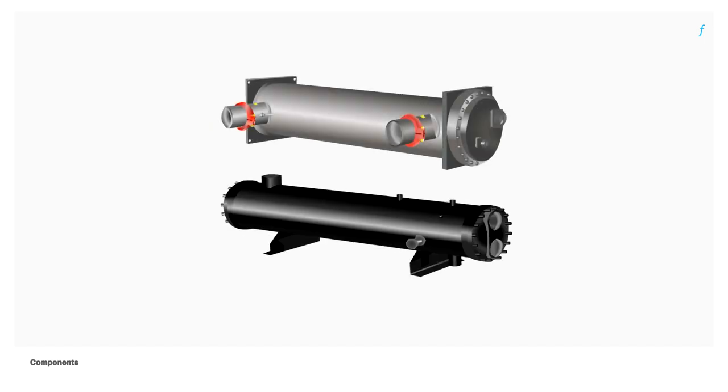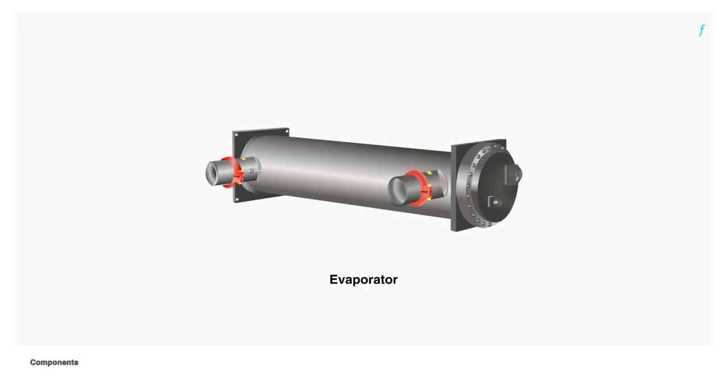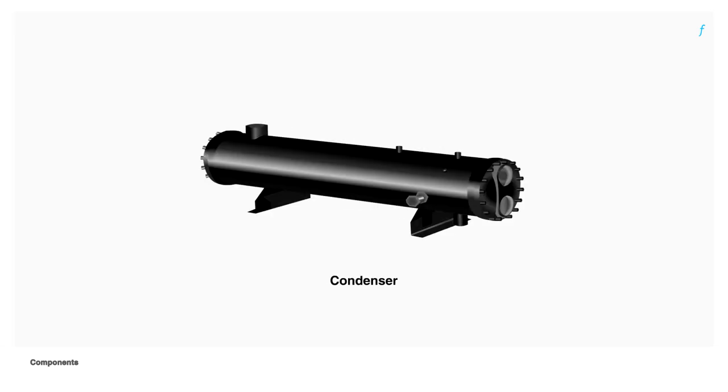The standard refrigeration cycle components, evaporator and condenser. Evaporator is where the cooling effect will be produced and condenser is where the refrigerant is condensed.